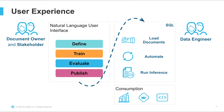The business user can evaluate the results, correct them if needed, and train the model if needed. Then they hand it over to the data engineer, who can implement that model in a pipeline. That pipeline is very simple: there's a stage of documents, the model gets pointed at that stage, and it processes those documents in bulk or one by one, depending on what the pipeline is designed to do.